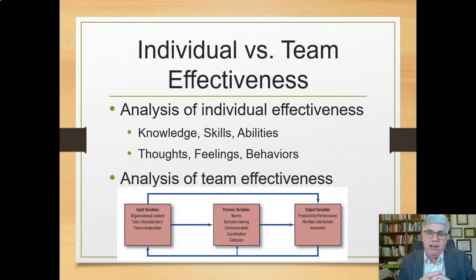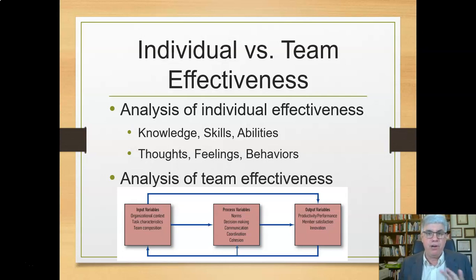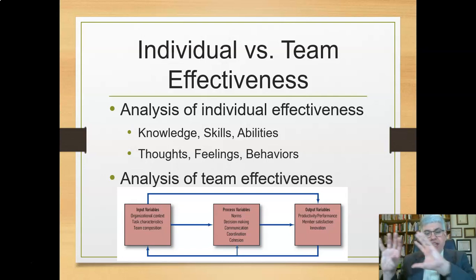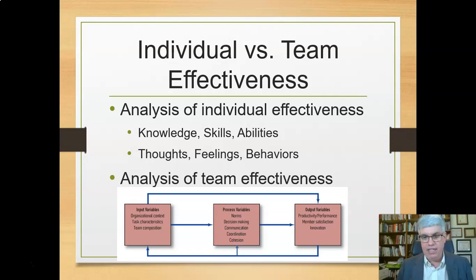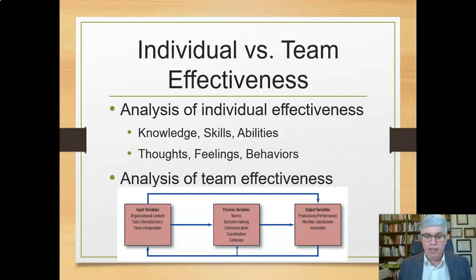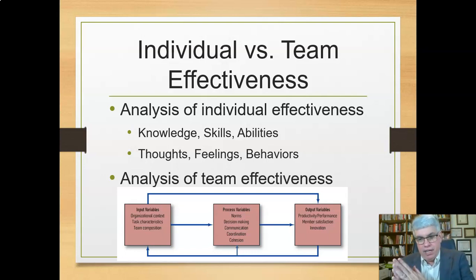Then we look at what they do when they're together — those are the process variables. You might get norms developing in the team, rules and patterns, how they make decisions, how they communicate, how they coordinate work together, how cohesive they are. And then we can look at the output variables — the results of teams either functioning or not functioning — including productivity or performance, what actually gets done, but also things like member satisfaction or innovation. We'll see later that the arrows don't just go in one direction; the output variables come back and influence the other things as well.